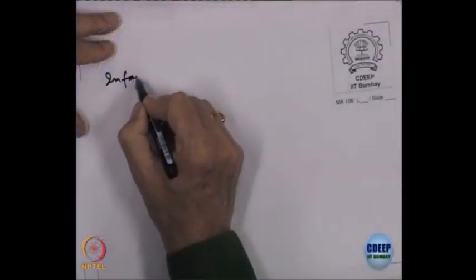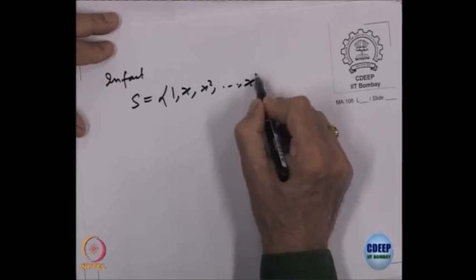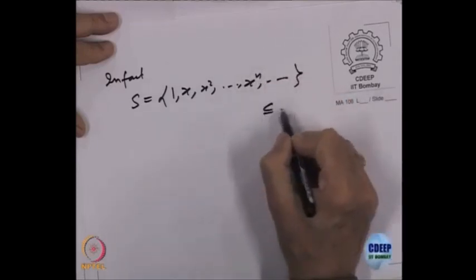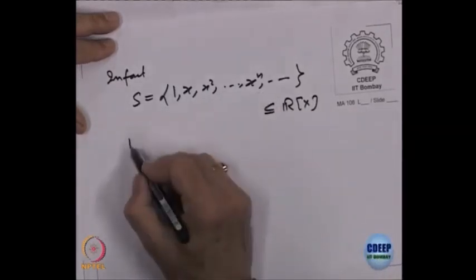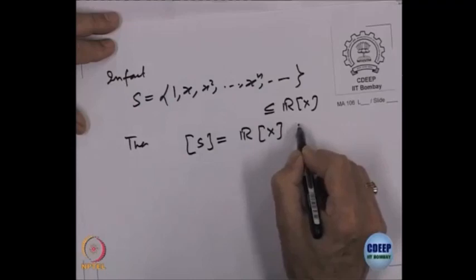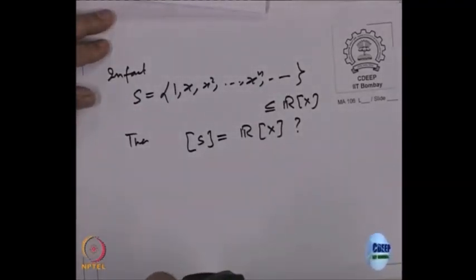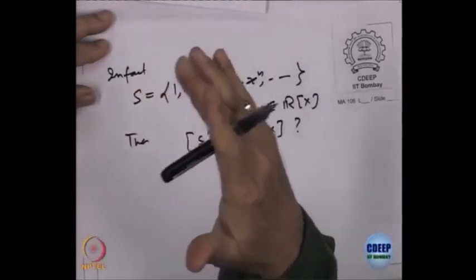We can write the set S = {1, x, x², ..., xⁿ, ...}, which is a subset of R[x]. It is not a finite set — it is an infinite set. The span of S equals R[x], so they generate R[x]. But if you stop at any finite point, that will not generate everything — higher degree polynomials will not be generated.